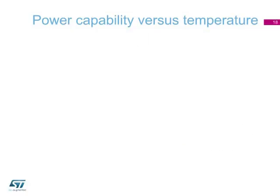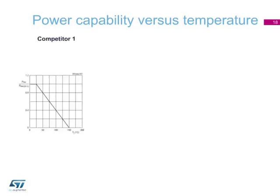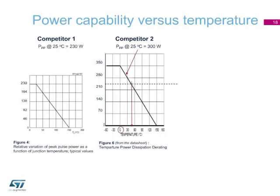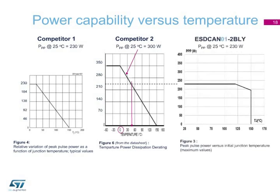On this slide, the previous curves are resized to get the same scale on the y-axis. Obviously, the second competitor has the advantage at 0 degrees Celsius, but above 50 degrees, ST's ESD CAN 01-2-BLY has definitely the best surge capability.